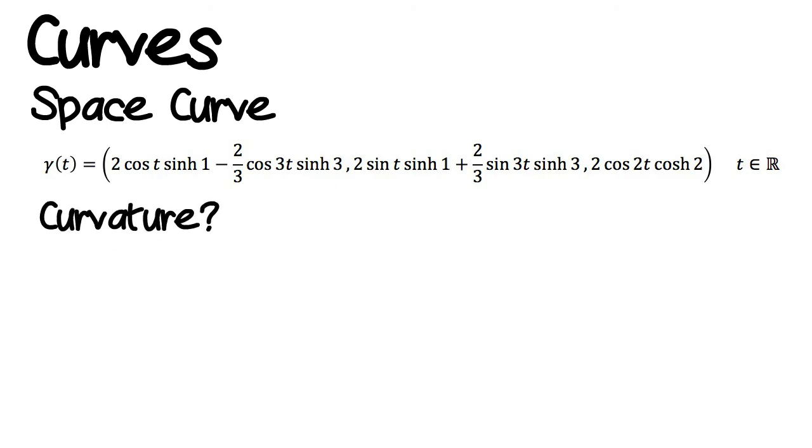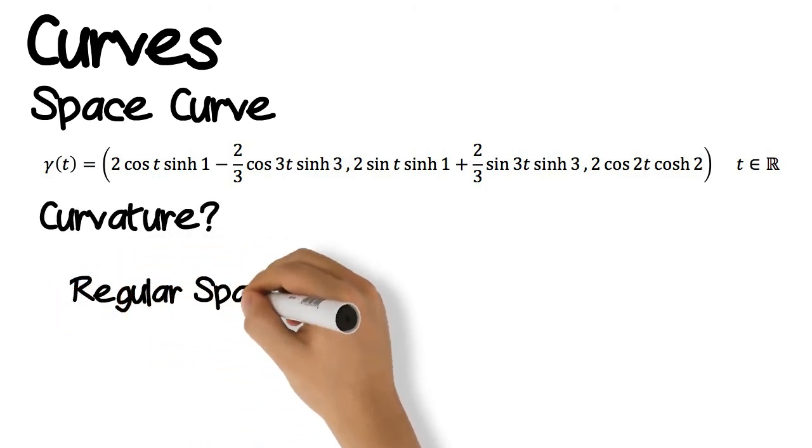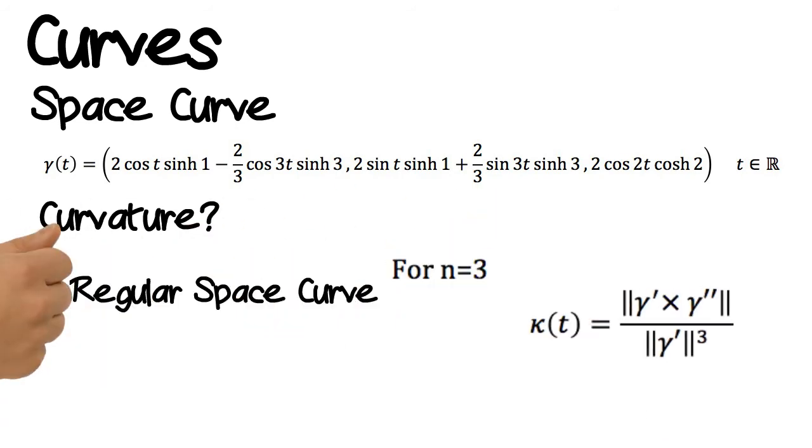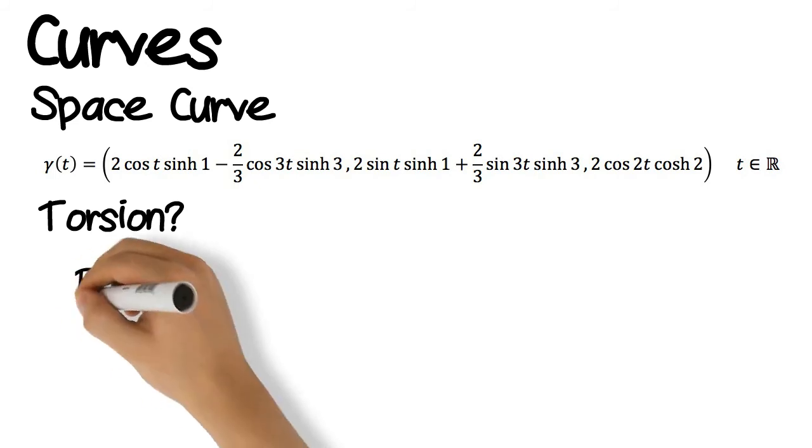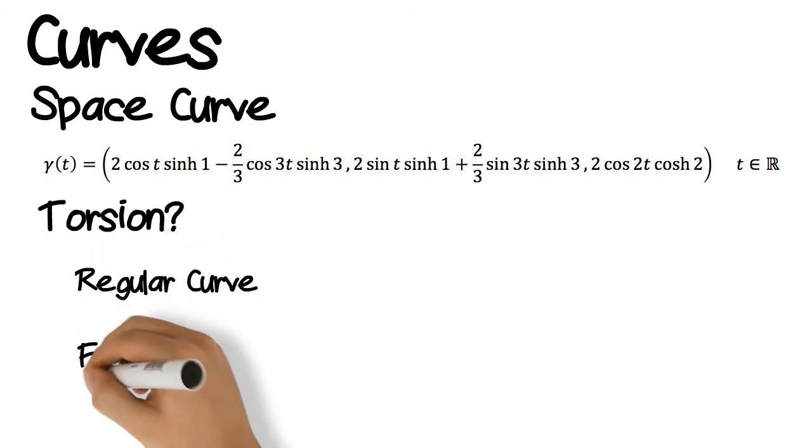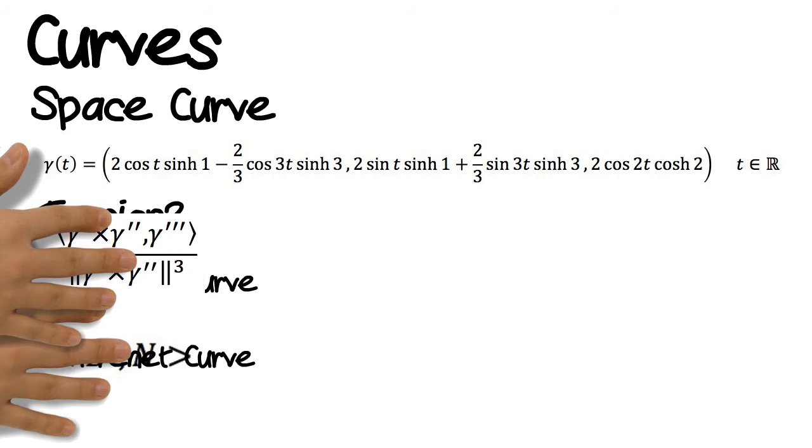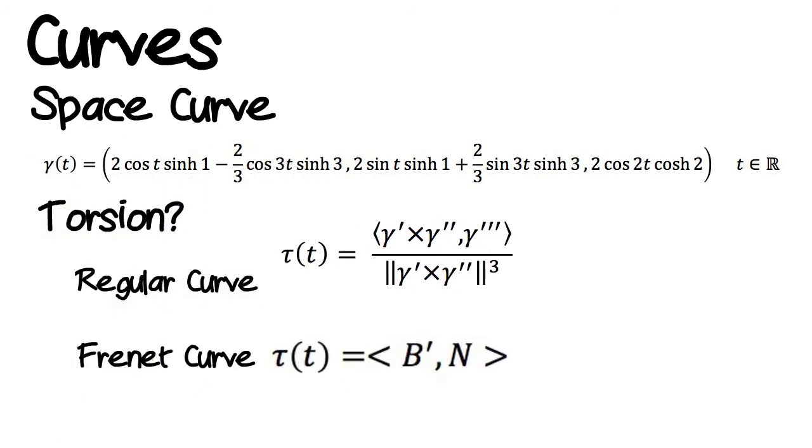Moving on, we can look at the curvature of the space curve. In this case, we can use the formula for calculating the curvature for three dimensions. We know that the curvature tells us how much the curve curves, but the torsion tells us how much a space curve deviates from lying in a plane. The torsion of the curve can be calculated like so, where B is the binormal of gamma and N is the normal. Using the curvature and the torsion of the space curve, we can see that our curve looks like...